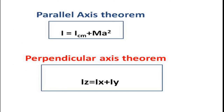There are two theorems for the calculation of moment of inertia of a body. The first one is the principle of parallel axis, or the parallel axis theorem. The second one is the principle of perpendicular axis, or the perpendicular axis theorem.